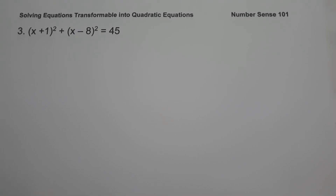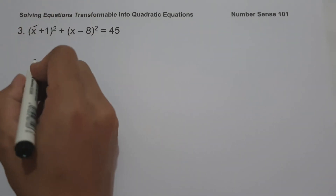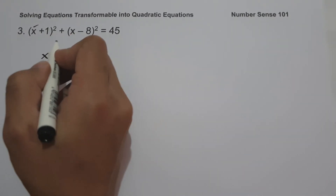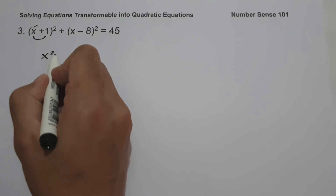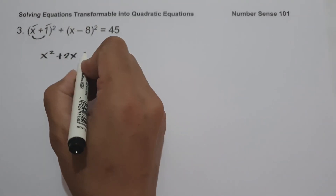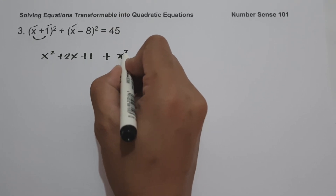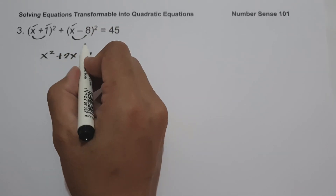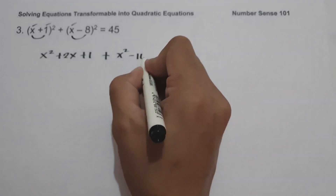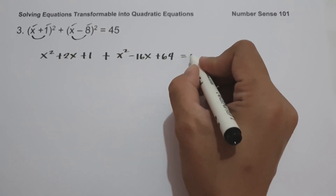On example number 3, we have the quantity x plus 1 squared plus the quantity x minus 8 squared equals 45. To find x, let us expand each binomial. Expanding (x+1)²: x squared plus 2x plus 1. Expanding (x-8)²: x squared minus 16x plus 64, equals 45.